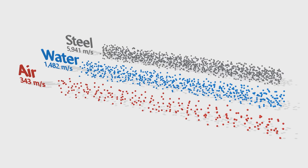For example, in air, the pressure wave is 343 meters per second. That's the speed of sound. But in water, it's actually 1482 meters per second. And in steel, it's almost 6000 meters per second.